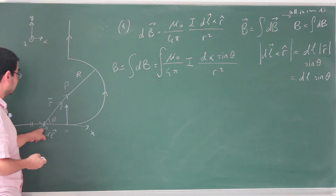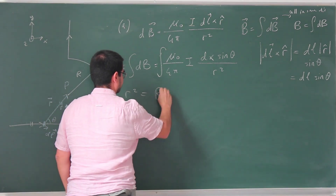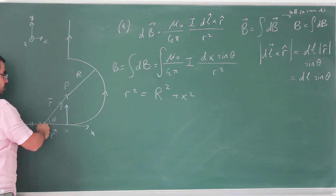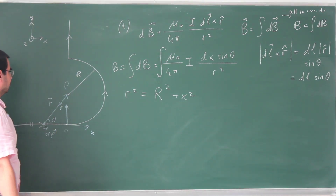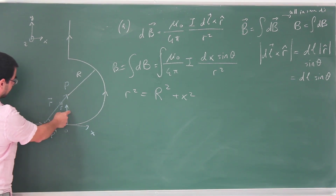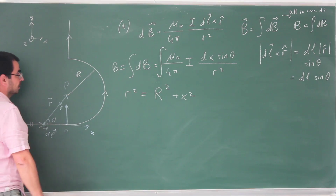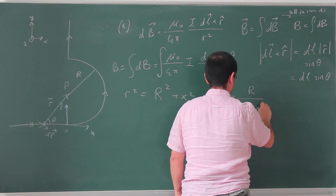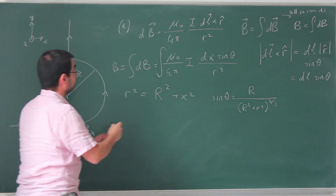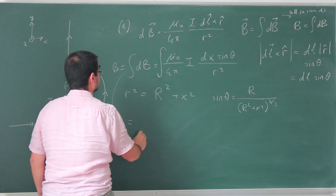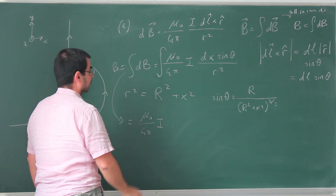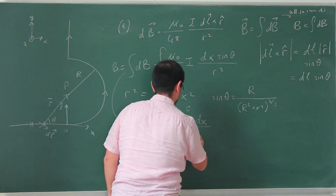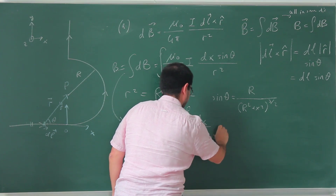Now, let's express sine theta and R in terms of x. R squared is simply capital R squared plus x squared. Sine theta goes with opposite over hypotenuse, so sine theta equals capital R over small r. Therefore sine theta over R squared equals capital R over (R squared plus x squared) to the 3/2 power. Making the substitution and taking constants out: B equals mu_0 over 4pi times I times capital R, integrated from minus infinity to 0, dx divided by (R squared plus x squared) to the 3/2.